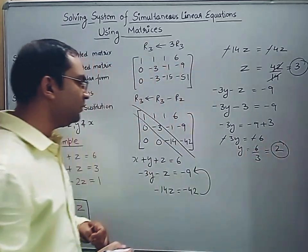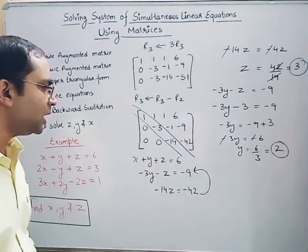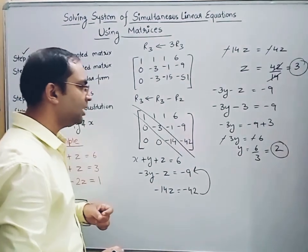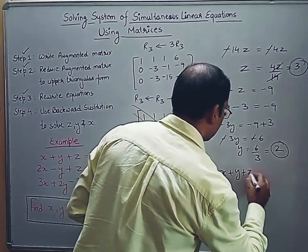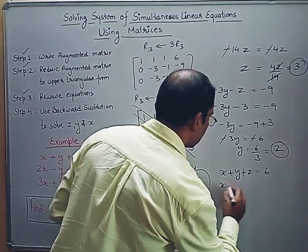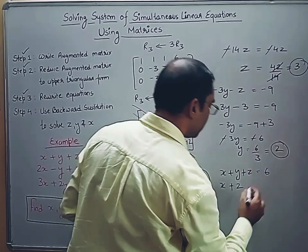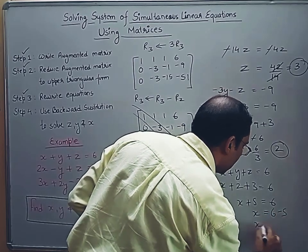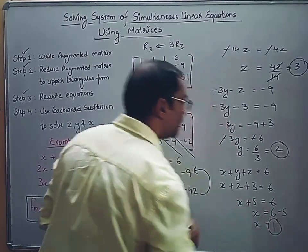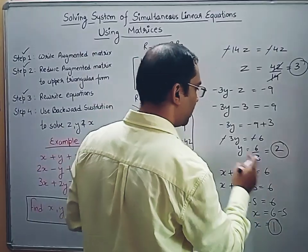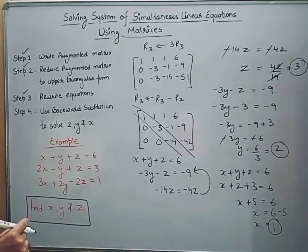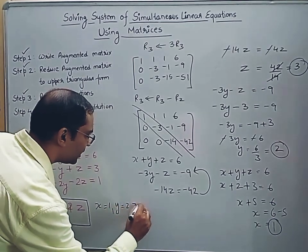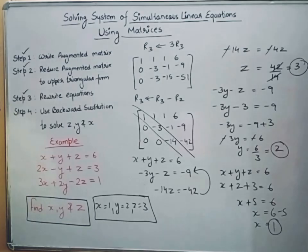Now substitute y = 2 and z = 3 into equation 1: x plus y plus z equals 6, so x plus 2 plus 3 equals 6, meaning x plus 5 equals 6, so x = 1. We have got all three solutions: x = 1, y = 2, and z = 3. This is the solution of the given system of linear equations.